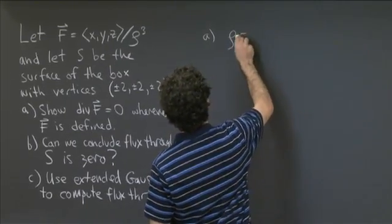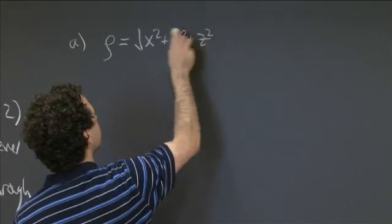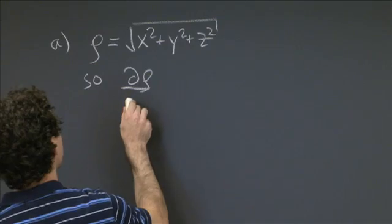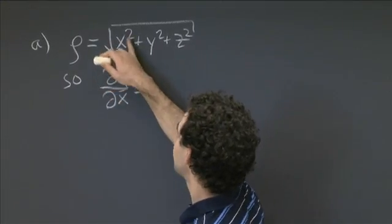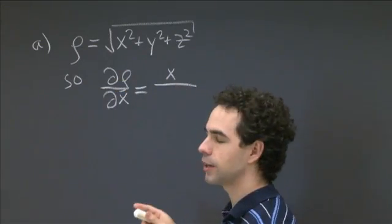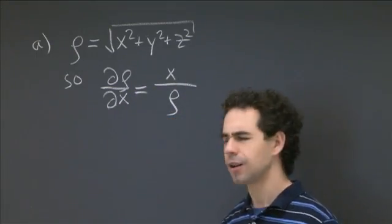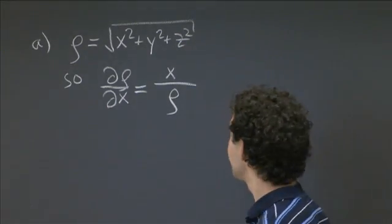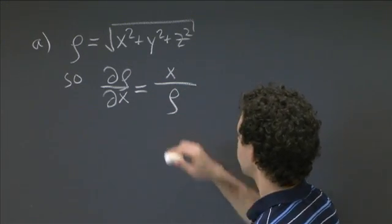So rho is equal to the square root of x squared plus y squared plus z squared. So partial rho partial x — you just apply your usual chain rule here, and we get x divided by the square root of x squared plus y squared plus z squared, so that's x divided by rho. I'm going to keep rho around, because otherwise I have to write out the square root of x squared plus y squared plus z squared over and over again. So this is d rho dx.